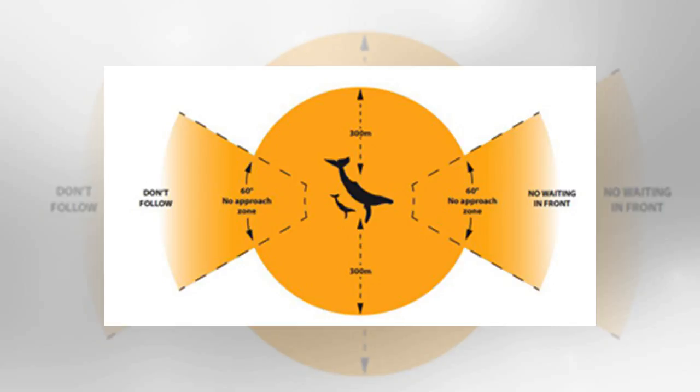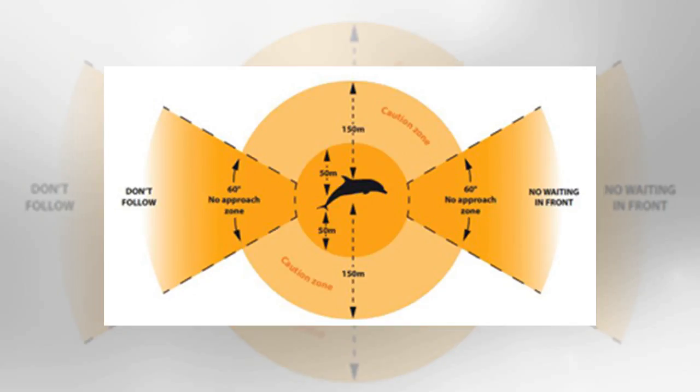Sometimes dolphins love to bow-ride, playing about around a boat of their own accord. If they do this, the vessel should not change course or speed suddenly and if they need to stop, stop gradually.